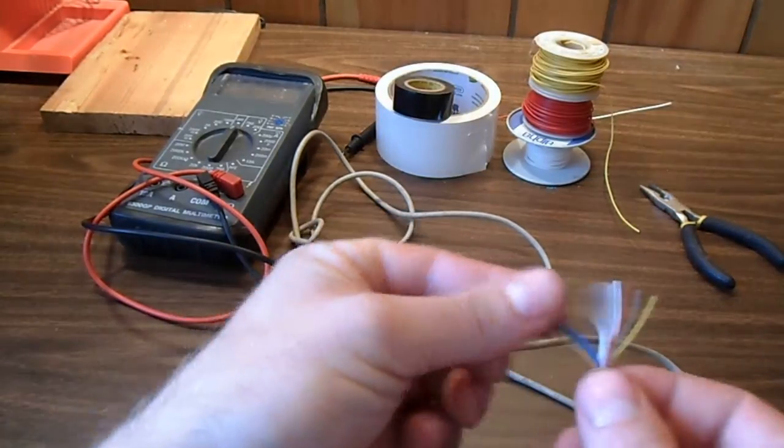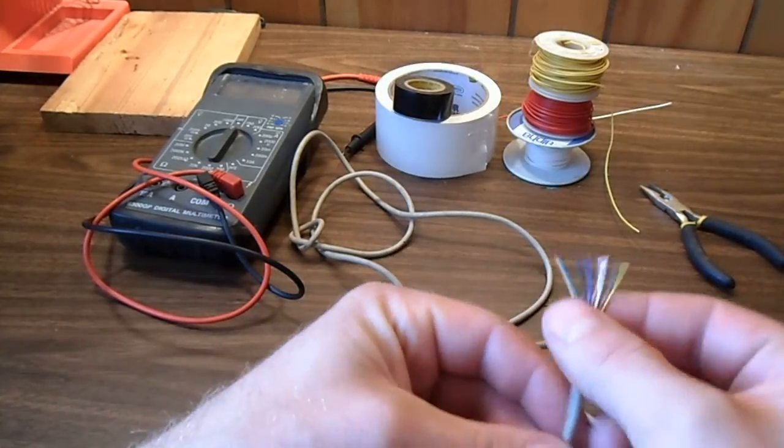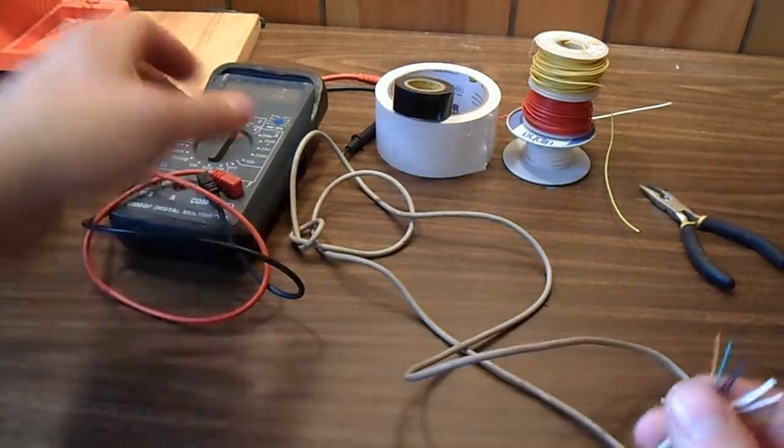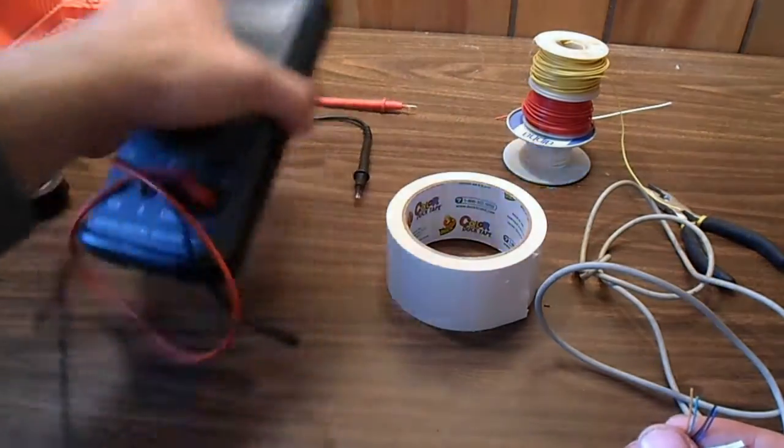As you can see, there's quite a few wires, although we only need three of these. To find those three that we need, we're going to use a multimeter.